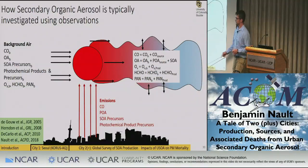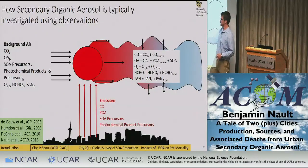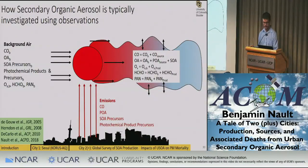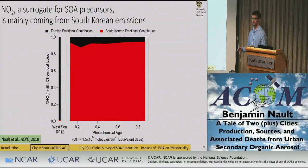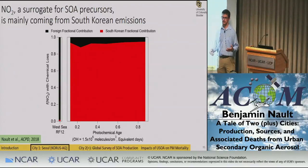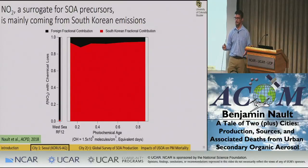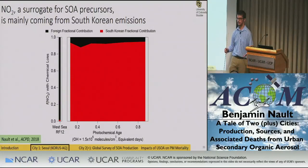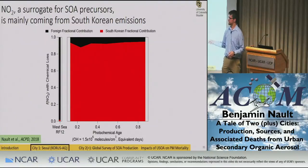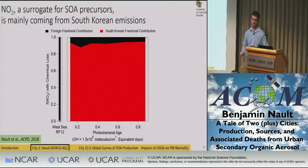One part I haven't discussed is the influence of SOA precursors on production. I approached this two ways. First, using Flexpart with NO2 — which has a lifetime of about one day as a surrogate for important hydrocarbon precursors: over the West Sea all NO2 is from foreign sources, but over Seoul most NO2 is from South Korea. The fact that short-lived NO2 is coming from local sources suggests a similar pattern for hydrocarbons that produce SOA over Seoul. We also had another method to validate this.